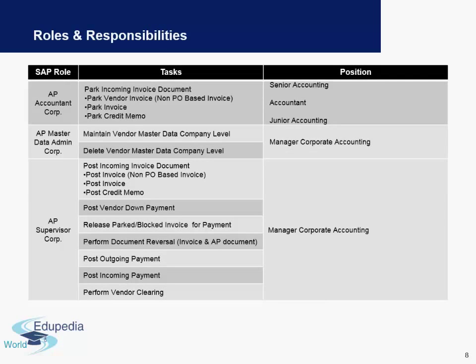The next role is an Accounts Payable Accountant at a corporate or manager level — this person is responsible only for parking documents. The Master Data Admin at this level is allowed to maintain and delete master data. Unlike junior roles that can only display, these roles can maintain and delete master data. Similarly, there is also an AP Supervisor Manager role.